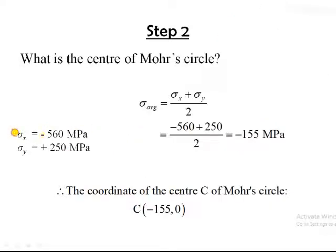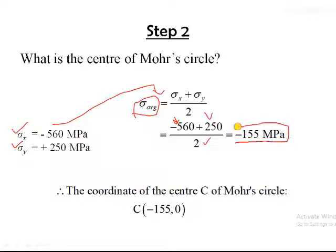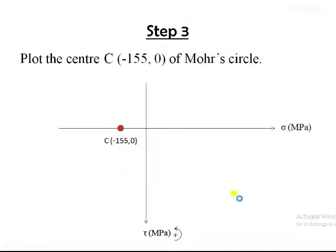Now we plug these values into the Sigma_average formula: Sigma_average = (-560 + 250) / 2 = -155 MPa. So the coordinate for the center of the Mohr's circle is (-155, 0), meaning normal stress is -155 MPa and shear stress is 0. We place this value on the axis system, going to the left-hand side by 155 units from the origin. Note that this graph is not to scale.